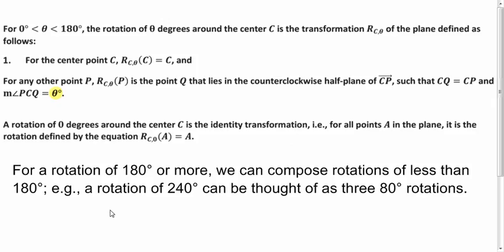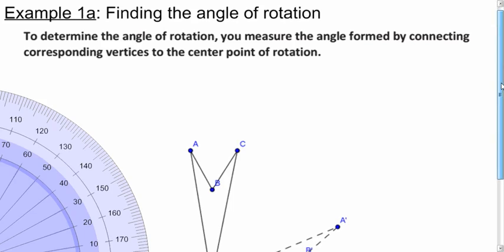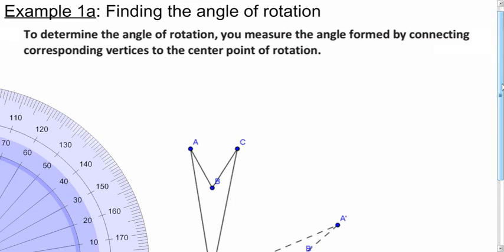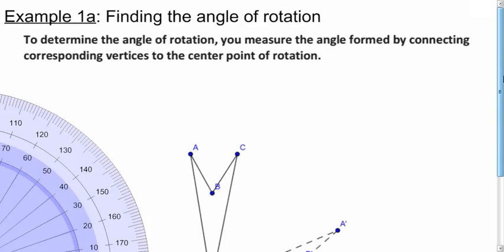And you've got to be careful. When we go over 180 degrees, when we're talking about rotations, you can think of it as rotations of smaller degree put together or composed. Because the protractor only has up to 180 degrees on it, so you've got to be careful there. So for example, 240 degrees, you can think of it as doing 80 degree rotations three times.